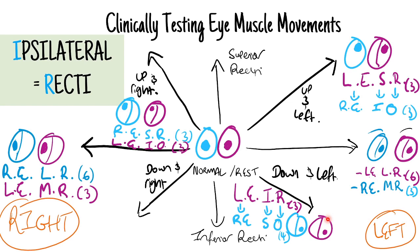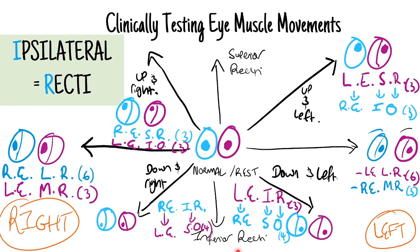Our final position: down and right. Start with the ipsilateral right eye - looking downwards, so that's the inferior rectus. For the left eye, opposite of inferior is superior, and opposite of rectus is oblique - so that's the superior oblique. That's hopefully a nice easy way of memorising the muscles of the eye.